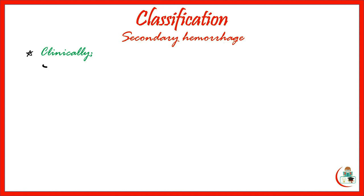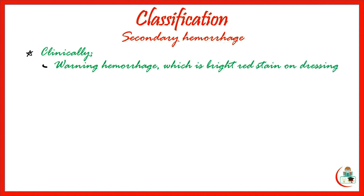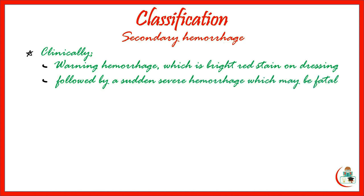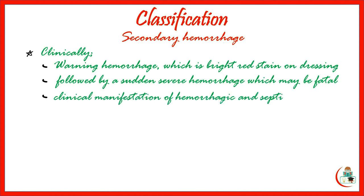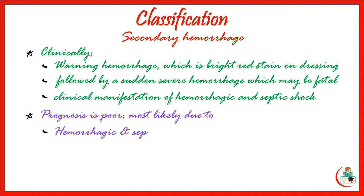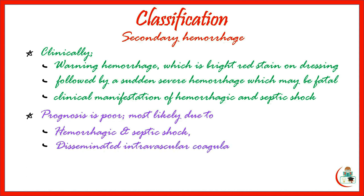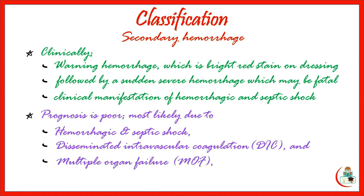Clinically, secondary hemorrhage has a warning sign, which is a bright red stain appearing on the dressing, followed by sudden severe hemorrhage which may be fatal. In addition, there are clinical manifestations of both hemorrhagic and septic shock. The prognosis is poor, most likely due to severe hemorrhagic and septic shock, as well as multiple organ failure (MOF), eventually leading to increased mortality.